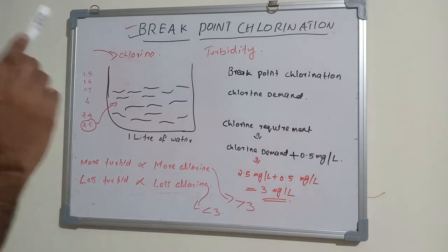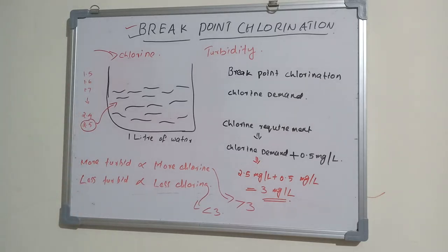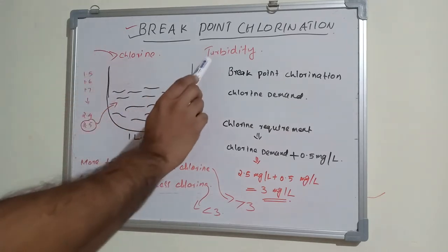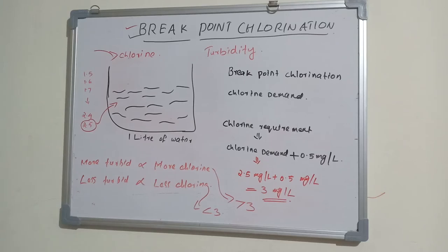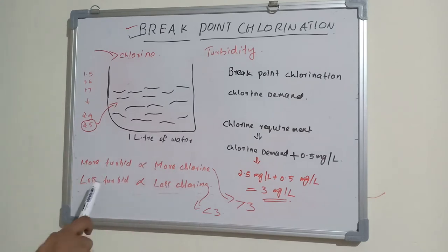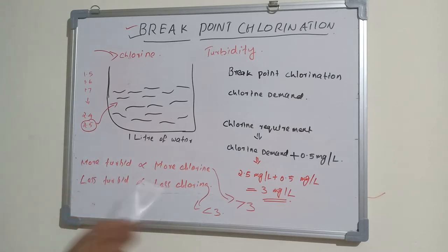Chlorine is added to the water to make it potable or drinkable. First we should understand what turbidity is, because the amount of chlorine we add depends on turbidity. Turbidity is how dirty the water is — how much contamination, bacteria, pathogens, and other contaminants are present. More turbid means more chlorine is needed; less turbid means less chlorine. It is directly proportional to the amount of chlorine required.